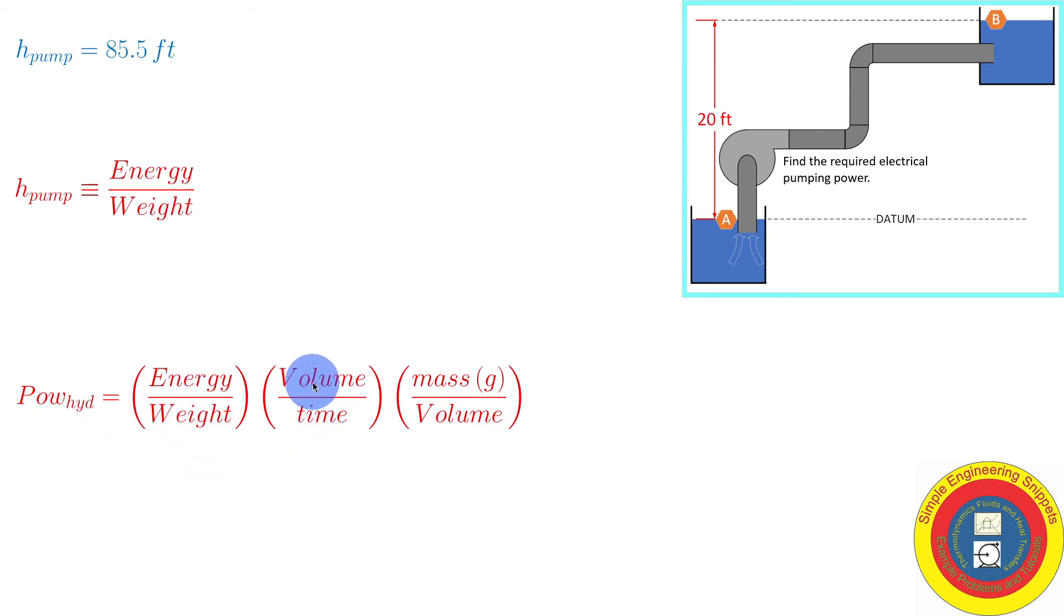To obtain power, I can take energy per weight, multiply that by volume per time, which is just the volumetric flow rate, and multiply that by the weight density, which is mass times the acceleration of gravity per volume, and that's just rho g. You go through and calculate all that out. You get energy per time. This is our equation for hydraulic power.